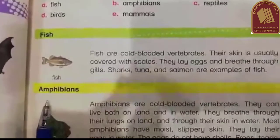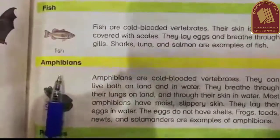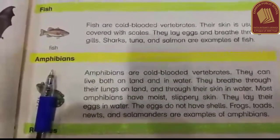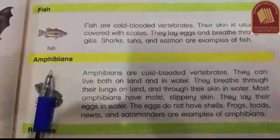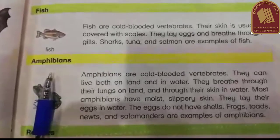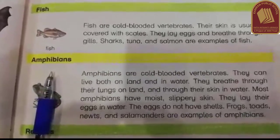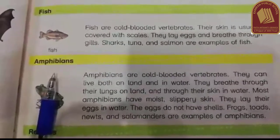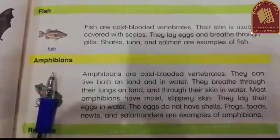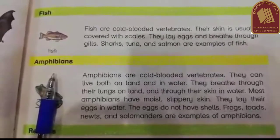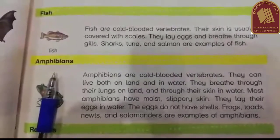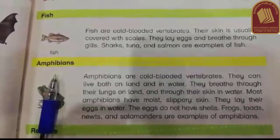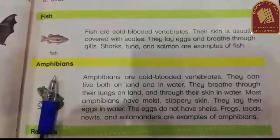The next group we learned was amphibians. Amphibians are cold-blooded vertebrates. They can live both in water and on land. Their skin is moist and they lay eggs without shells. Examples include frogs, toads, and newts.